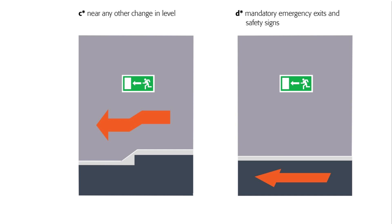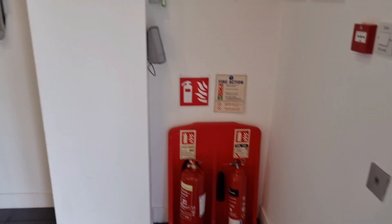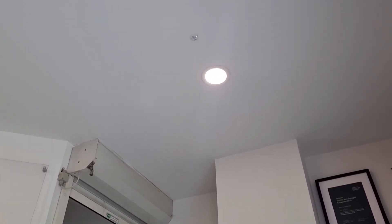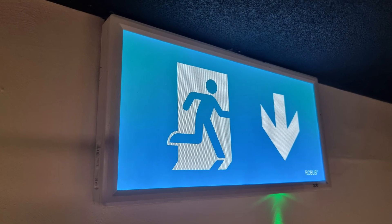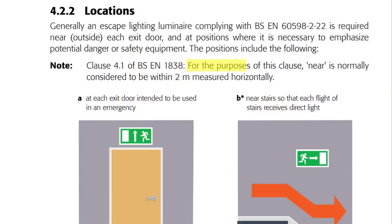Next up is mandatory emergency exits and safety signs. The example given is a direction of travel sign, but this could include signs to safety equipment like first aid locations or firefighting equipment. These probably wouldn't have their own internal illumination so might require an emergency light fitting nearby. We also have the option for glow-in-the-dark safety signs, but quite frankly we're electricians — we're going to prefer a nice light fitting. It's worth noting that for the purposes of this clause, 'near' means two metres.